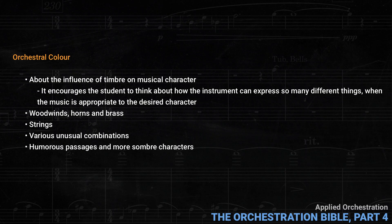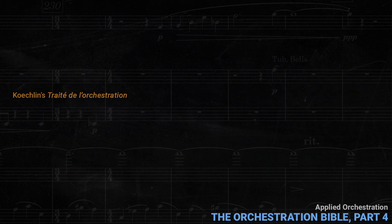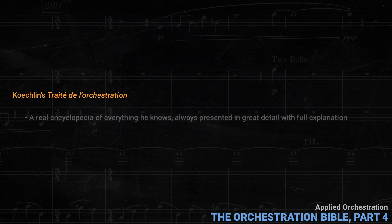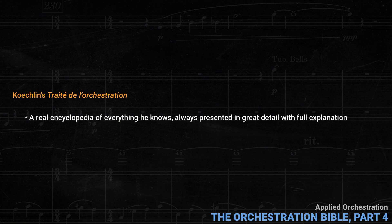There are sections about humorous passages and also more somber characters and how to orchestrate them. At the end of this chapter, Koechlin returns to the quality of the music itself. One can create impressive effects with orchestration, but if the underlying music is mediocre, the listener will not want to hear it again. All the craftsmanship in the world is not worth much if the composer's expressive goals are not well thought out. All through these four volumes, Koechlin's generosity as a teacher is everywhere in evidence. This isn't just an orchestration textbook like the others, but rather a real encyclopedia of everything he knows, always presented in great detail with full explanation. Just being able to provide these thousands of specific examples requires an incredibly deep knowledge of the musical repertoire. Even for people who don't speak French, just the examples are worth the price of the set. This kind of incredible generosity is rare, and it's characteristic of a great teacher.